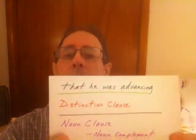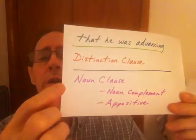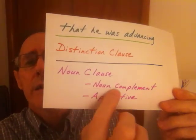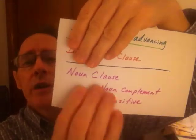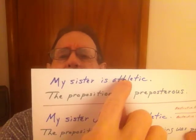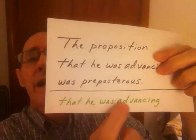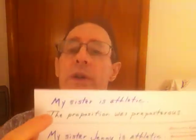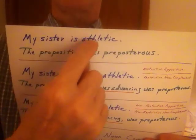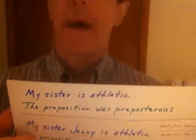In my previous videos I talked about the distinction clause, but we're not talking about that now. We're talking about your basic noun clause used as a noun complement or an appositive. Now we'll take a simple sentence: "My sister is athletic." And then we'll put our other sentence from our previous study: "The proposition was preposterous." We took the noun clause out of the middle — out of our sample sentence. We see that we're given very little information. "My sister is athletic" doesn't tell us much. "The proposition was preposterous" also doesn't tell us much.